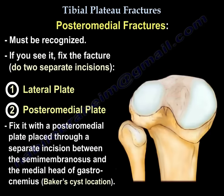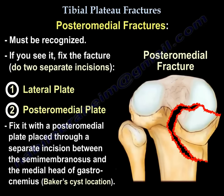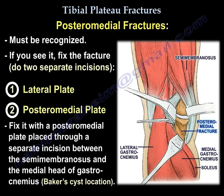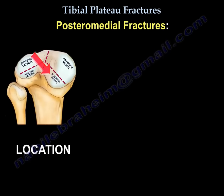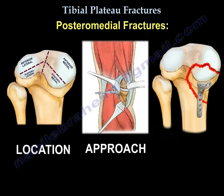The posteromedial fragment must be recognized — if you see it, fix it. Use two separate incisions: fix it with a lateral plate through a lateral approach and a posteromedial plate through a separate incision between the semimembranosus and the medial head of the gastrocnemius, which is the Baker's cyst location. This is the approach for posteromedial plate fixation.